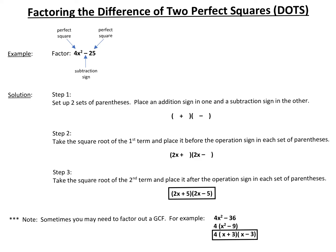Here we're going to talk about factoring the difference of two perfect squares, which we abbreviate as DOTS. It stands for difference of two squares — it's just a shortcut name.